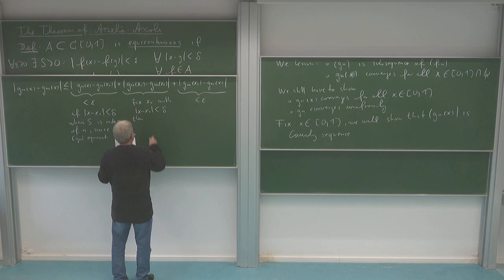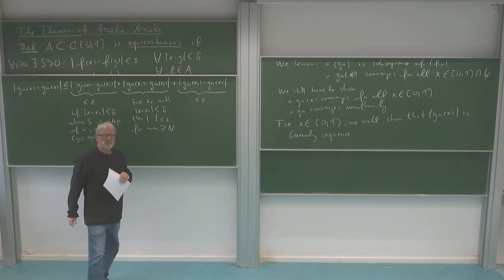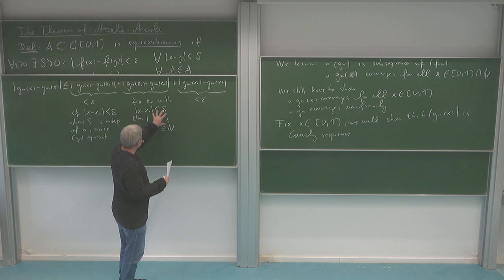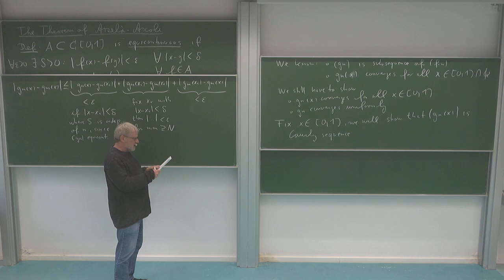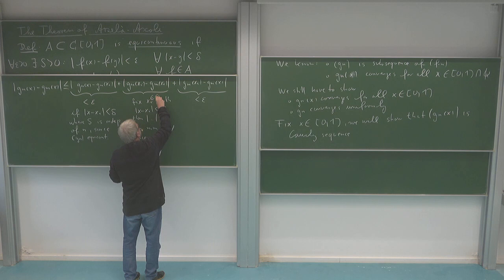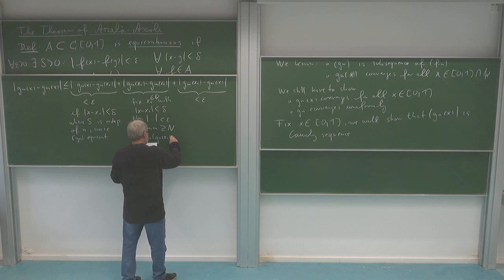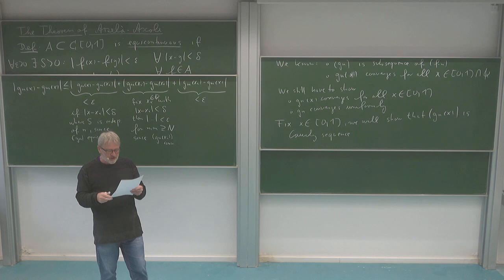This difference here is smaller than epsilon for all n and m bigger than some capital N. There exists a capital N such that whenever n and m are bigger than this, this is smaller than epsilon. That's the Cauchy property of the sequence GN of XI. This is because we know at the rational numbers - in particular I am choosing XI in Q - that GN at the point XI converges, since those are the points from the enumeration of the rational numbers in the interval 0 to 1.